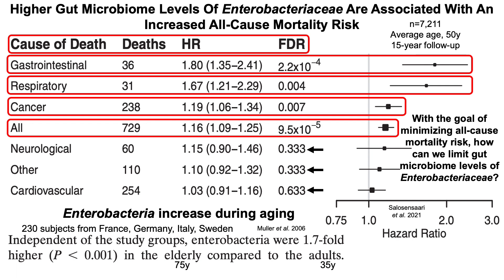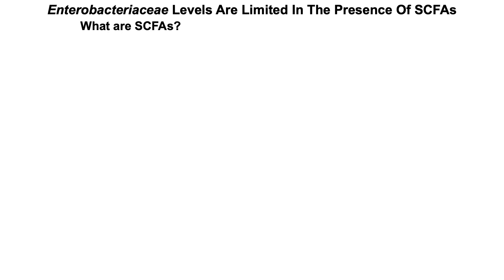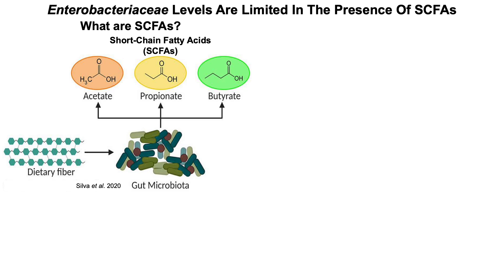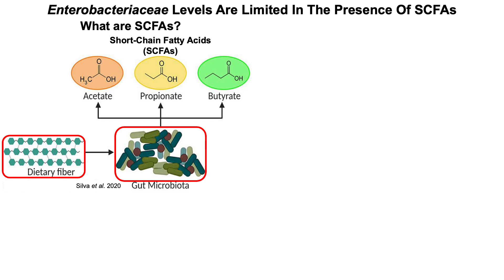So how can we limit gut microbiome levels of enterobacteria? Enterobacteria levels are limited in the presence of short-chain fatty acids — SCFAs. Dietary fiber is comprised of insoluble fiber, which is mostly not fermented by gut bacteria, and soluble fiber, which is converted by gut microbiota into the short-chain fatty acids acetate, propionate, and butyrate.